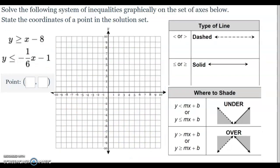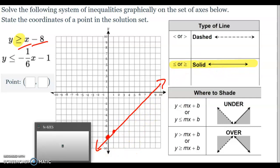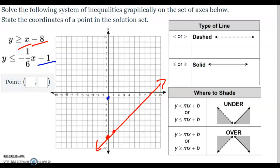Let's take a look at another example. I'm going to go ahead and graph the first one here. So I'm at the y-intercept negative 8. I've got the slope which is 1, so that means I'm going to go up 1 and to the right 1, and I'm going to draw the line. Now this time it's equal to, so I drew a solid line.